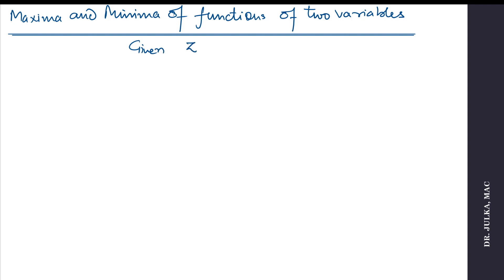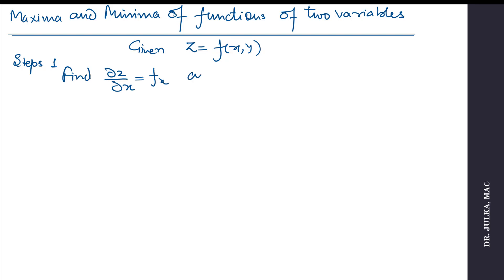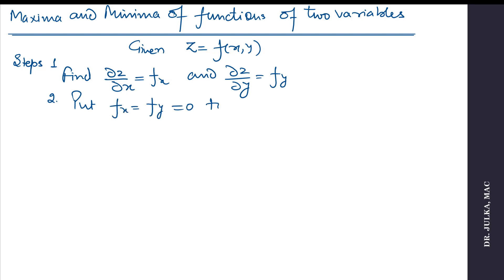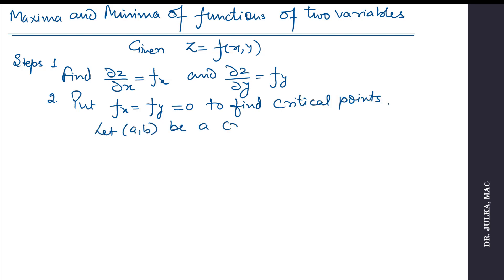Given that z is a function of x and y. First, we find the partial derivative with respect to x and the partial derivative with respect to y. Then we put the first partial derivative equal to 0 to find critical points. Let (a, b) be a critical point.